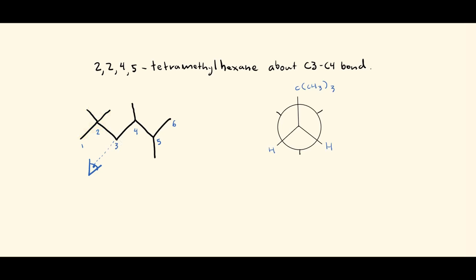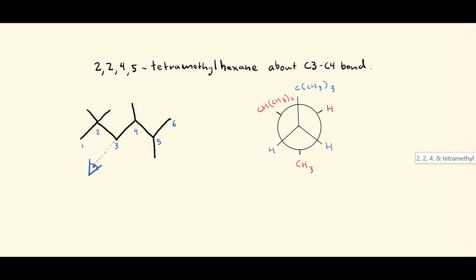The back carbon is carbon-4. Attached to it we have a methyl group, an isopropyl group, and one implied hydrogen. We'll draw that in red. Right now we're not concerned about the positioning — we just randomly oriented the groups.